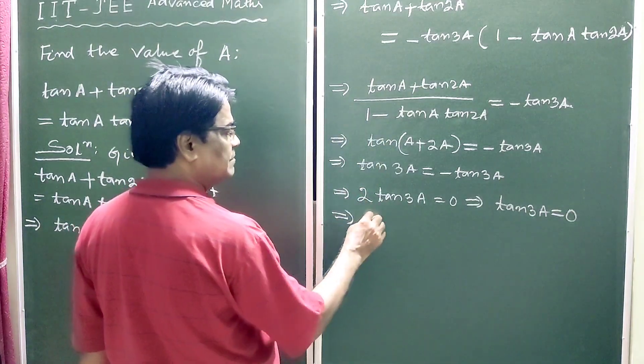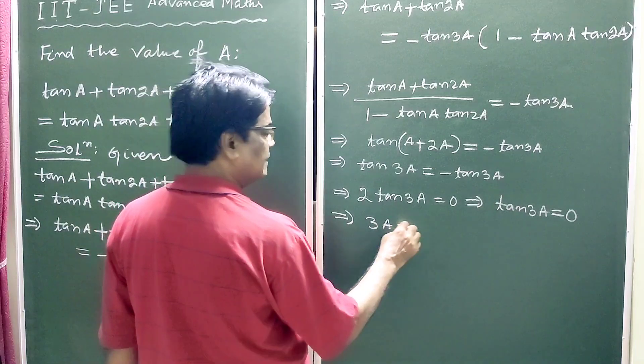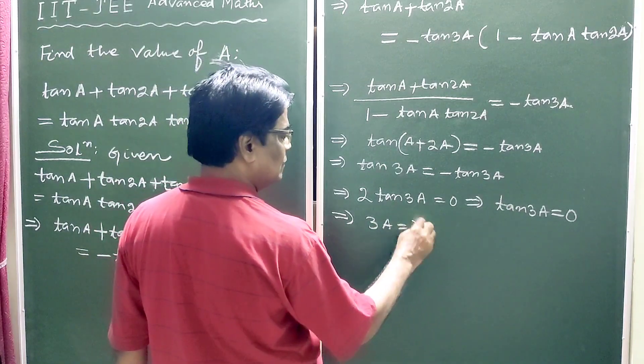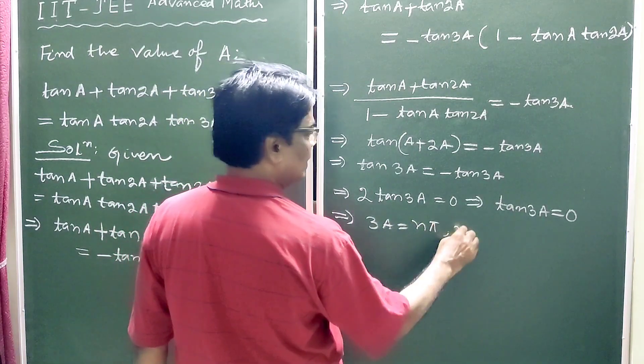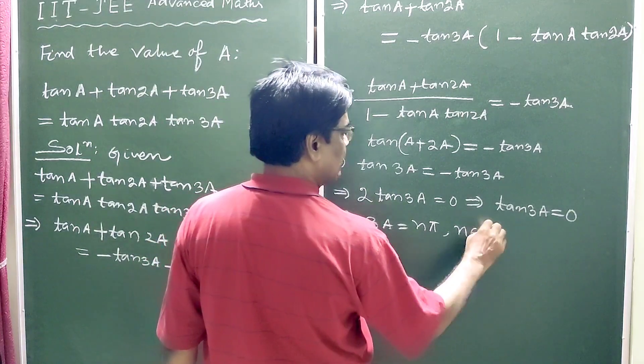This implies 3A equals n pi, n belongs to I, the set of integers.